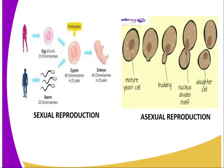The fusion of the nuclei of the male and female gametes is known as fertilization. Asexual reproduction does not involve gametes; instead, parts of the mature organism may develop to form new individuals, as you can see from our screens.